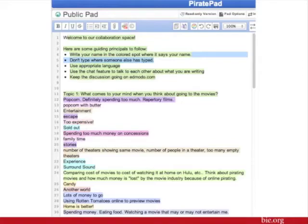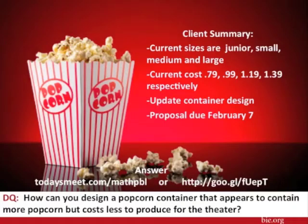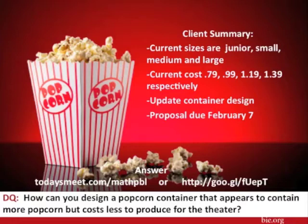As you can tell, the client currently has four different popcorn containers. The smallest cost is $0.79, while the largest cost is $1.39. They want the design of the container to be updated and want our proposal of changes by February 7th. With this in mind, how can you design a popcorn container that appears to contain more popcorn but costs less to produce for the theater?